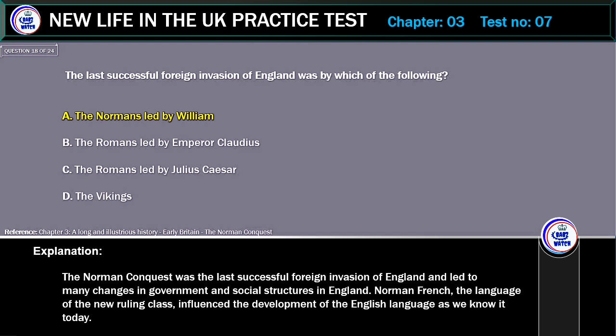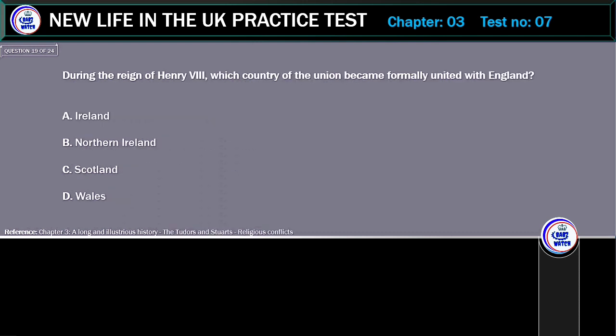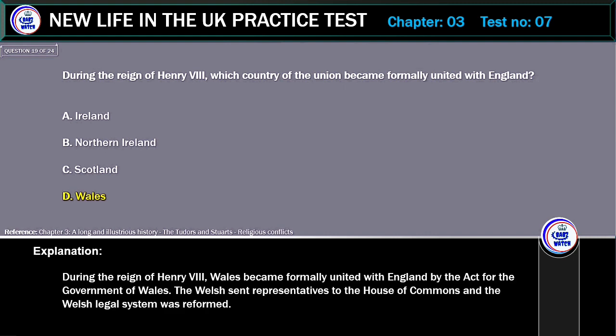Norman French, the language of the new ruling class, influenced the development of the English language as we know it today. During the reign of Henry VIII, which country of the Union became formally united with England? A. Ireland. B. Northern Ireland. C. Scotland. D. Wales. Correct answer: Wales. Explanation: During the reign of Henry VIII, Wales became formally united with England by the Act for the Government of Wales. The Welsh sent representatives to the House of Commons and the Welsh legal system was reformed.